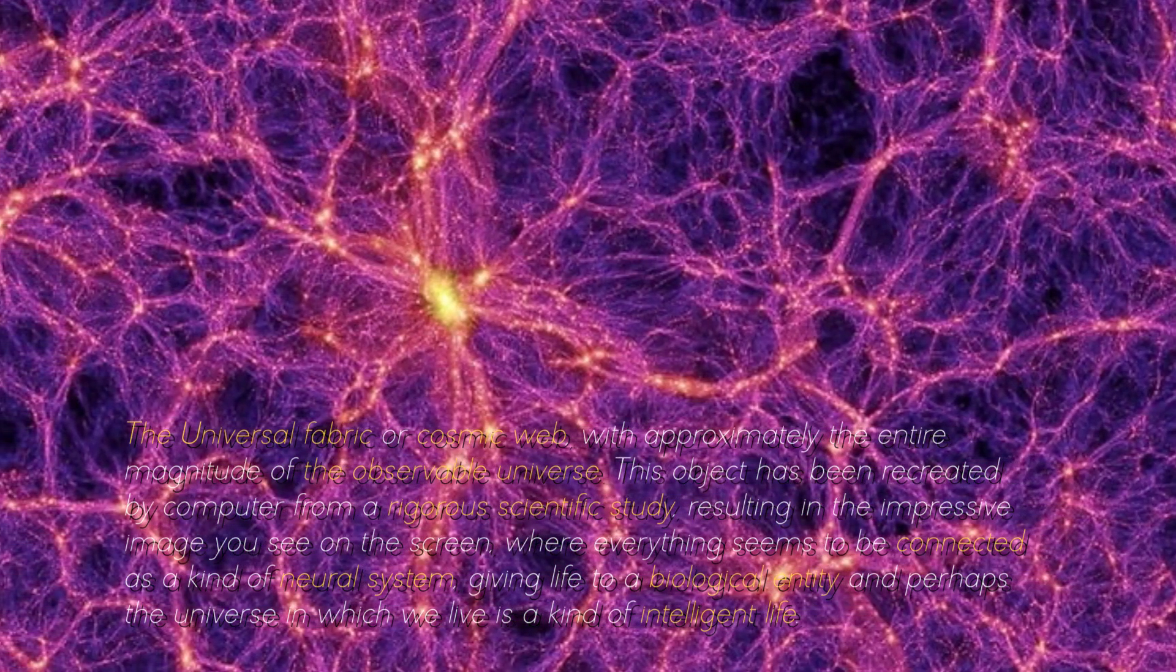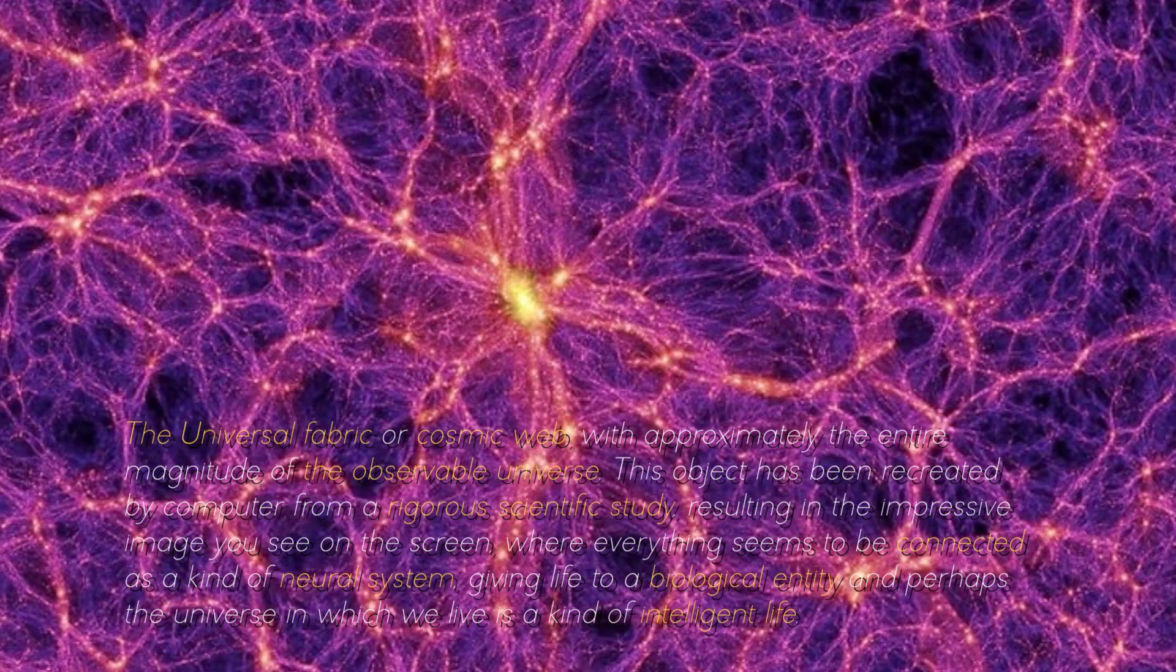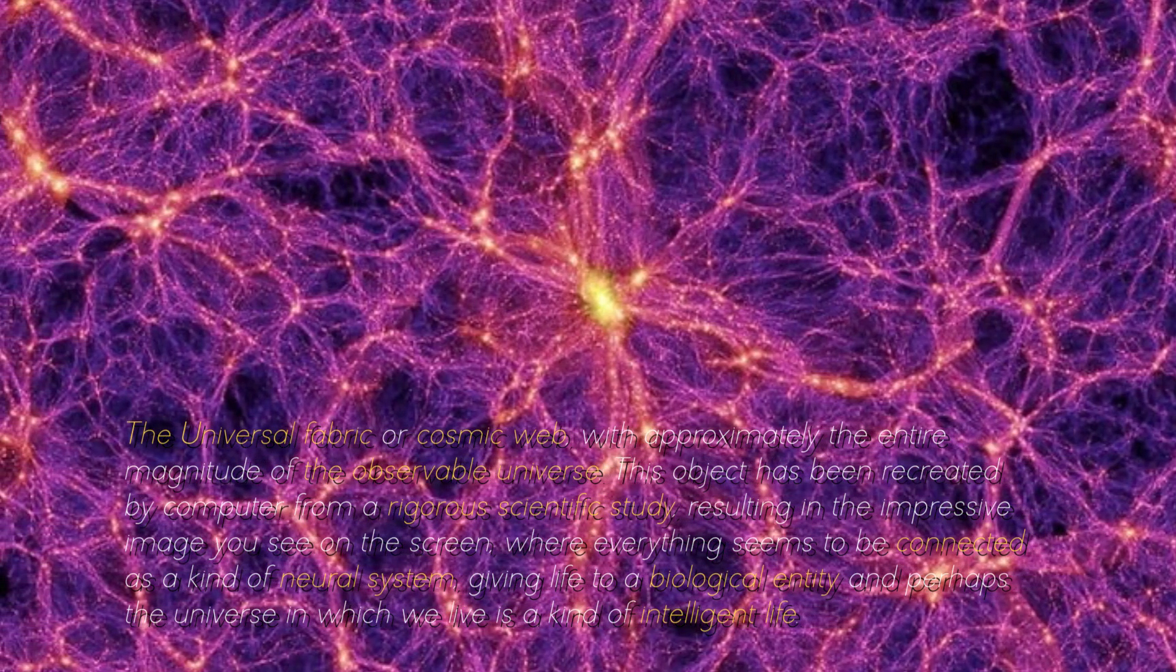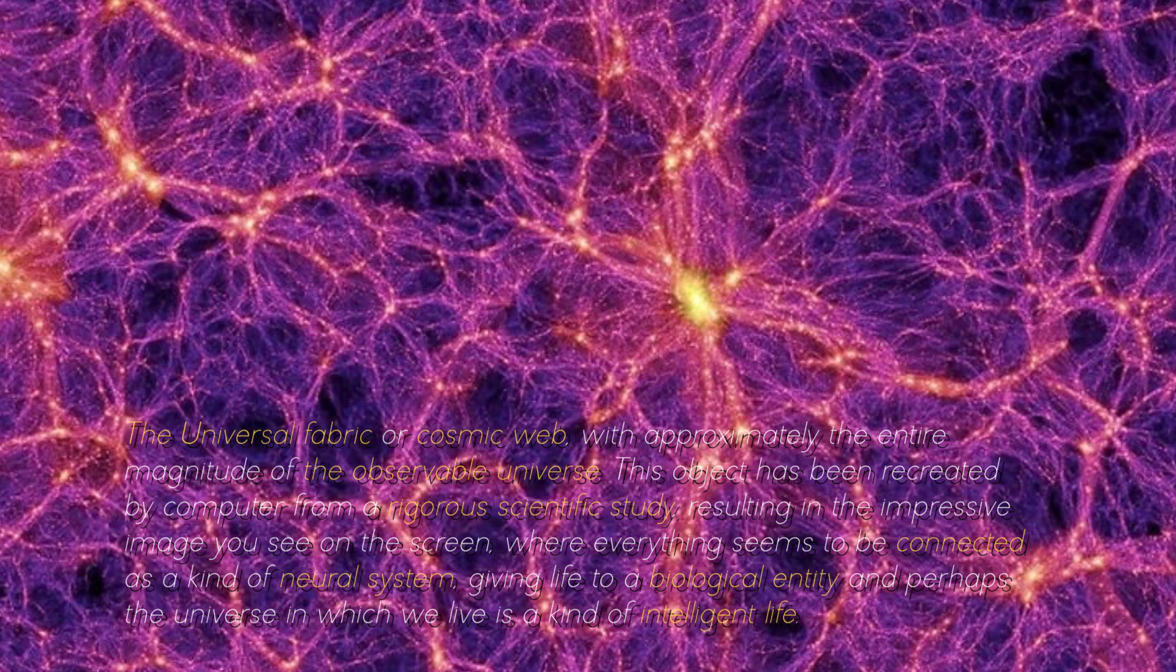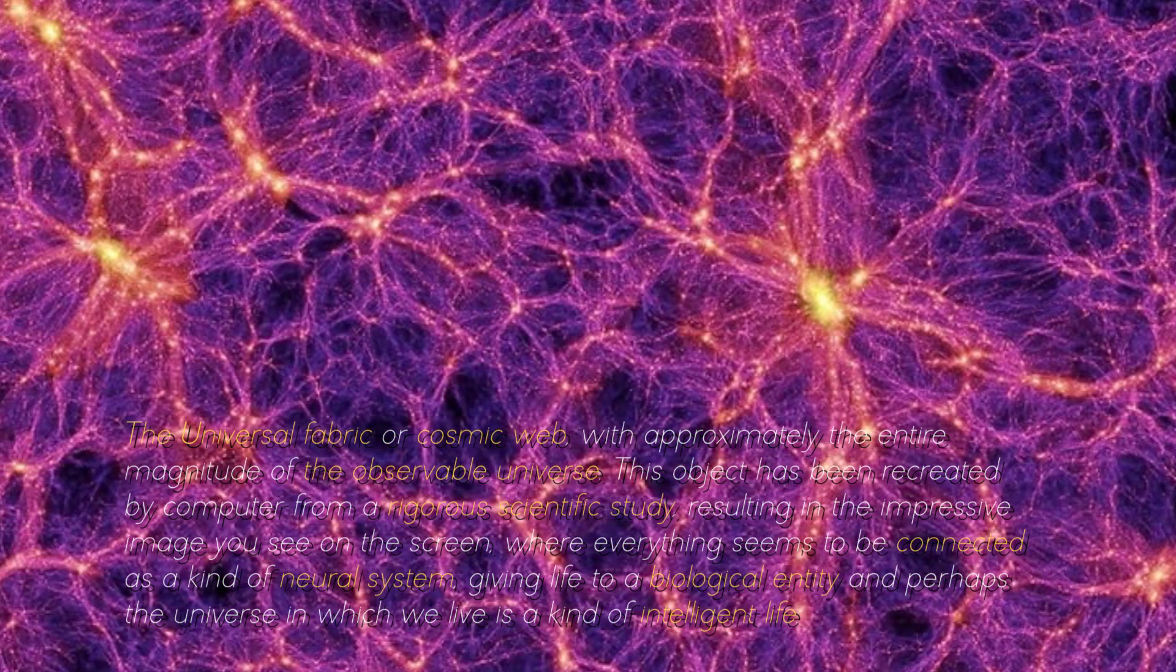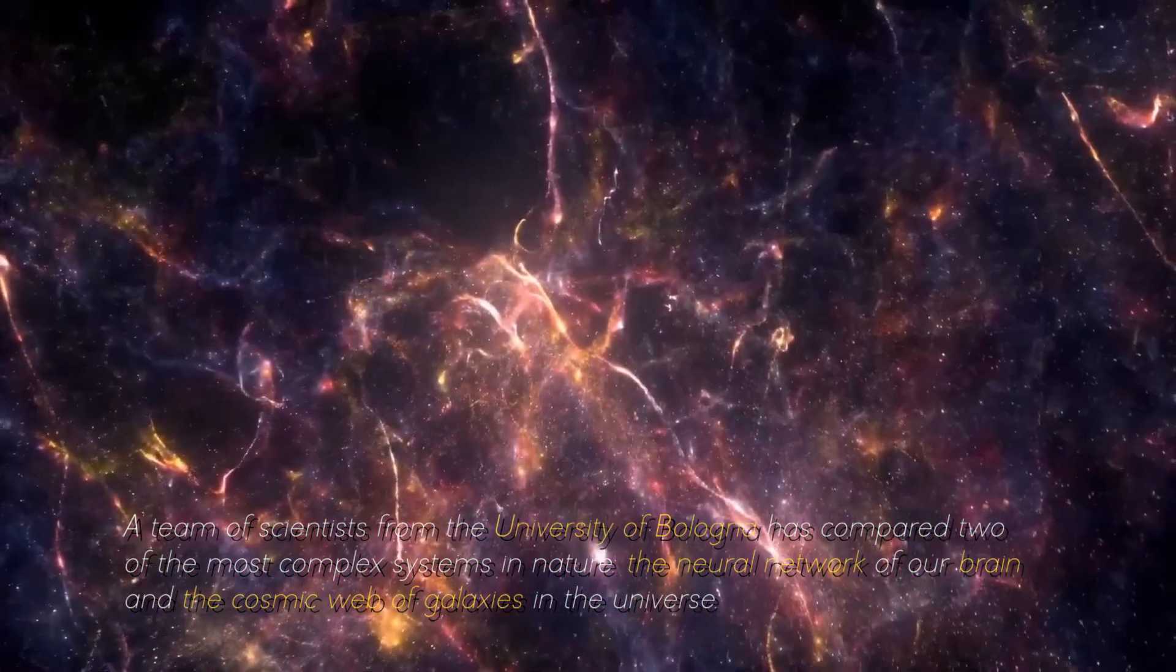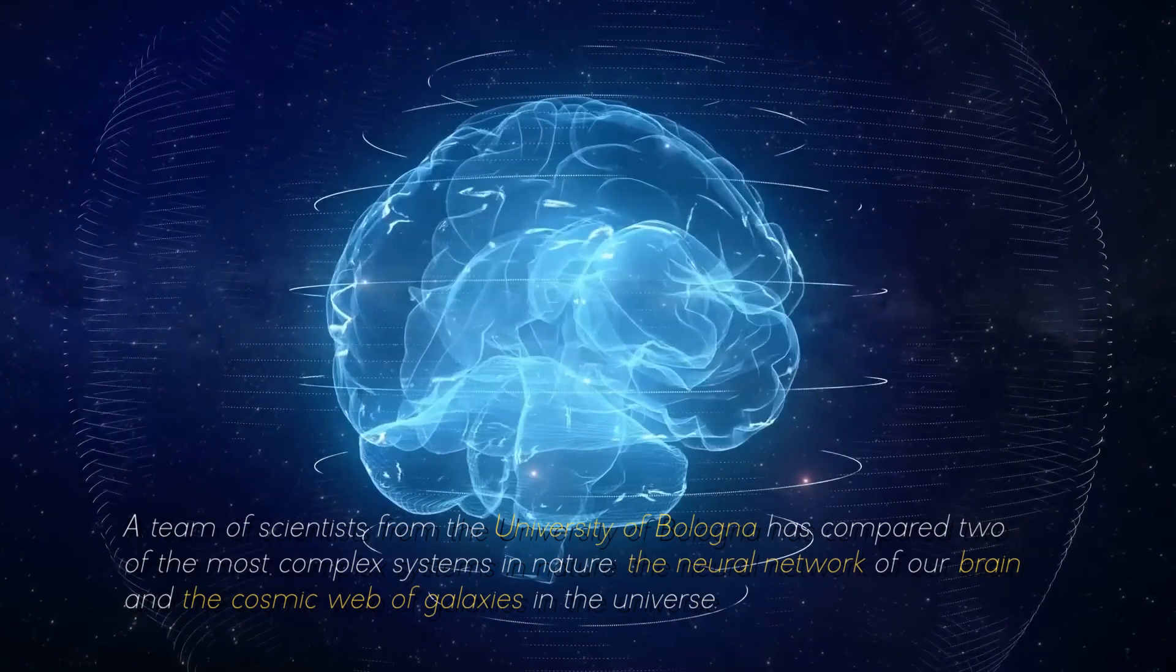With approximately the entire magnitude of the observable universe, this object has been recreated by computer from a rigorous scientific study, resulting in the impressive image you see on screen, where everything seems to be connected as a kind of neutral system, giving life to a biological entity, and perhaps the universe in which we live is a kind of intelligent light. A team of scientists from the University of Bologna has compared two of the most complex systems in nature, the neural network of our brain and the cosmic web of galaxies in the universe.